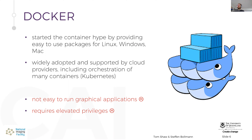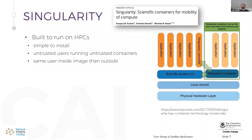What's the problem with Docker for us? We run a lot of graphical applications — FSL view, MRR view and similar tools — and that's not easy with Docker. Docker also requires elevated root privileges. That's why a different tool was created for the scientific community: Singularity. It's very similar to Docker and does basically the same thing, but it runs on high performance computing systems and allows untrusted users to run untrusted containers, meaning you're the same user inside the image as outside. Because of this you can run it in a shared environment, which you can't do with Docker.